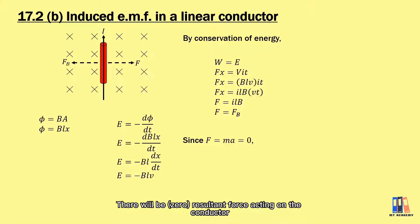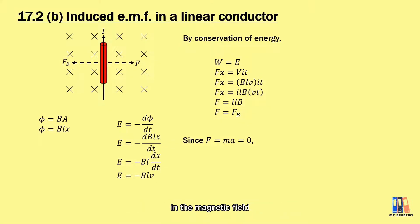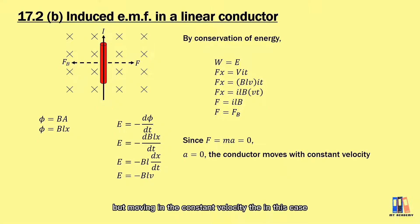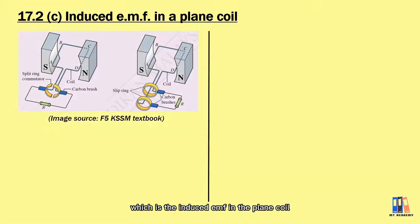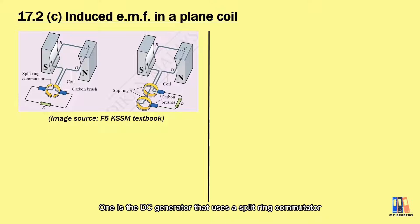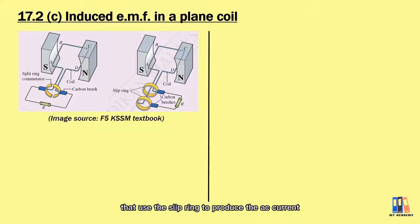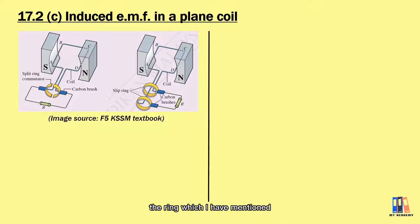Next, we're going to talk about the second case, which is the induced EMF in a plane coil. You also learned about generators in SPM physics. One is the DC generator that uses a split-ring commutator, and another is the AC generator that uses slip rings to produce AC current. The difference between these two generators is the type of ring used and also the type of output, either DC or AC current.